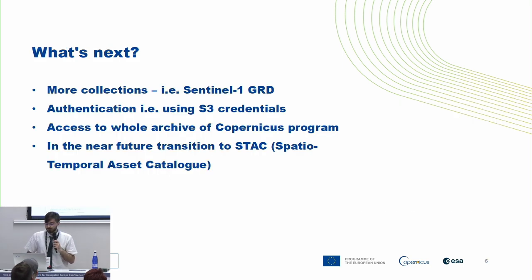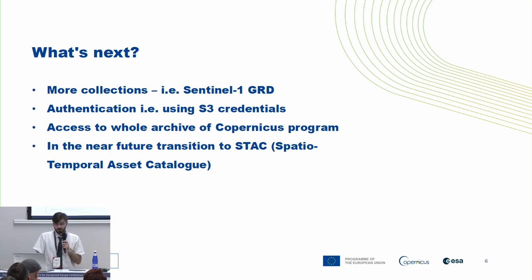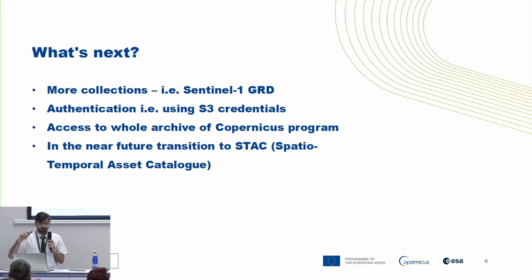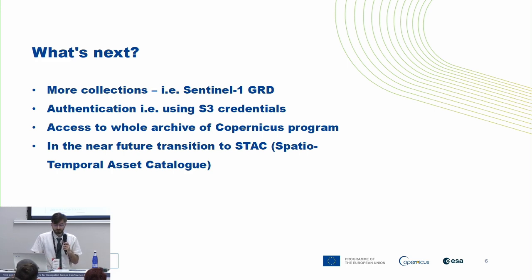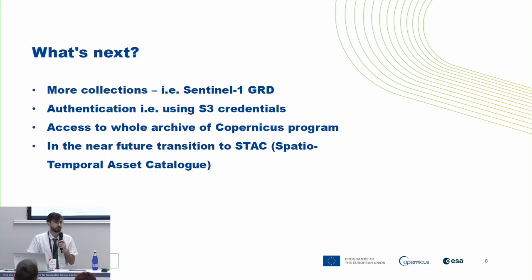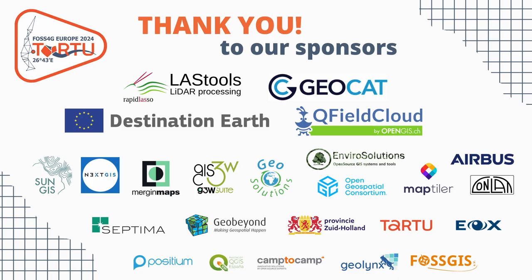Those are the things we have now, but what's next? We want to add more collections, like Sentinel-1. We want to authenticate users via S3 credentials. We want to allow users access to the whole archive of the Copernicus program. And the most important point is the transition to STAC, which will probably be a new standard for cataloging satellite data and all spatial-temporal data. Thank you.